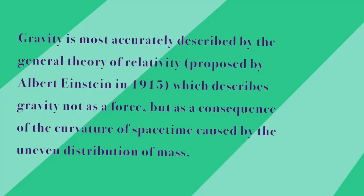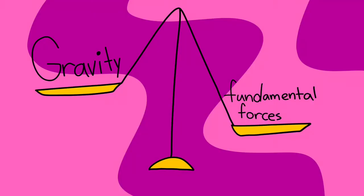Gravity is most accurately described by the General Theory of Relativity, proposed by Albert Einstein in 1915, which describes gravity not as a force, but as a consequence of the curvature of space-time caused by the uneven distribution of mass. Gravity is also weaker than the other four fundamental forces.